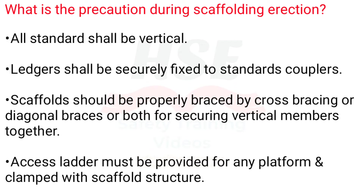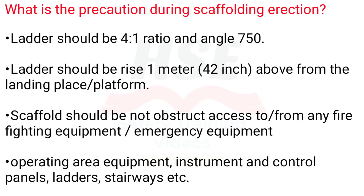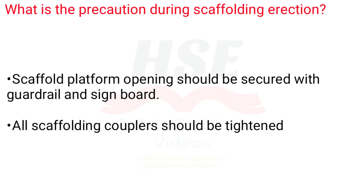Access ladders must be provided for any platform and clamped to the scaffold structure. Ladder should be at a 4 to 1 ratio at an angle of 75 degrees. Ladder should rise 1 meter above the landing place. Scaffold should not obstruct access to firefighting equipment, emergency equipment, operating area equipment, instrument and control panels, ladders, or stairways. Scaffold platform openings should be secured with guard rail and signboard. All scaffolding couplers should be tightened.